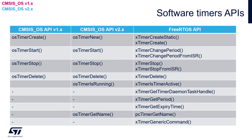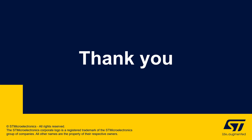We can compare different versions of APIs concerning software timers. Within CMSIS OS APIs there is no distinction between interrupt and task code execution — this is handled automatically within CMSIS code. However, it is important to note that we must not start, stop, or delete a timer from an interrupt. Thank you for watching this video.